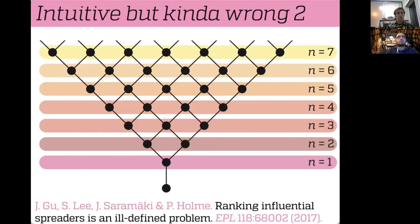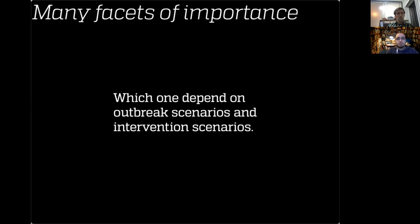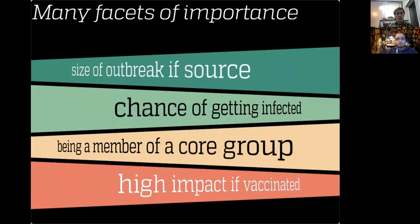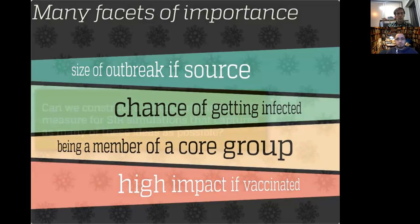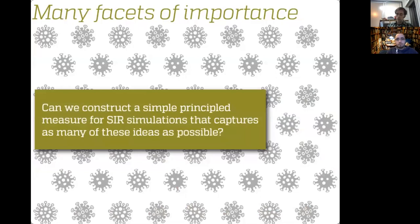This is maybe not so serious, because using a ranking actually would work in heterogeneous networks. What you really want is something case-dependent. The most important nodes should be defined with a specific disease in mind and a specific set of intervention scenarios. For theorists, the problem could be stated as: construct a simple principled measure for SIR simulations that captures as many of these ideas as possible — the best compromise. I use the SIR model on empirical temporal networks with compartmental models dividing people into susceptible, infectious, and recovered classes, coupled with a temporal network of who is in contact with whom at what time.